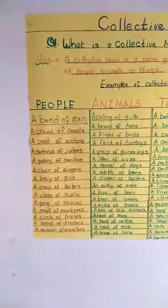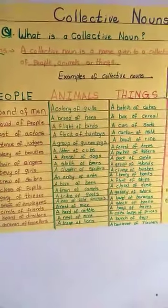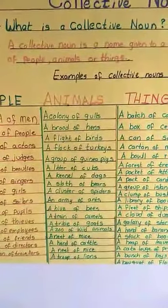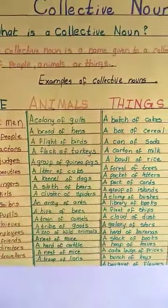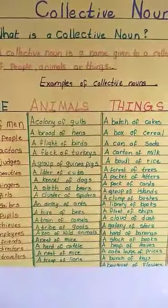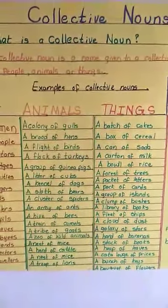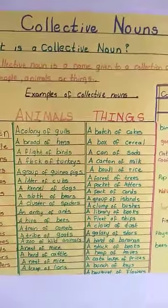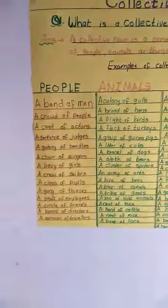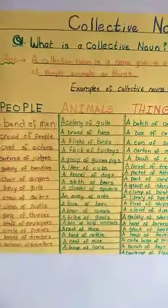A proper noun is a noun which starts with a capital letter. It is given as a special name to people, animals, things, days, festivals, months, weeks. Special names give a name to a common name.